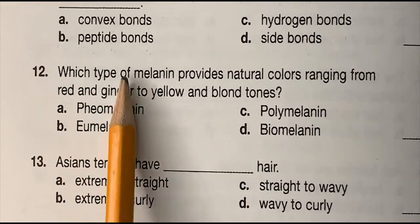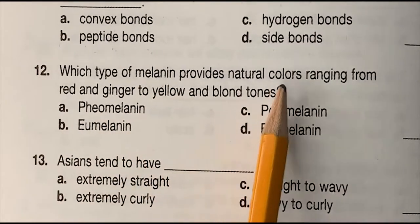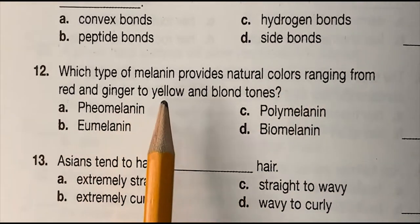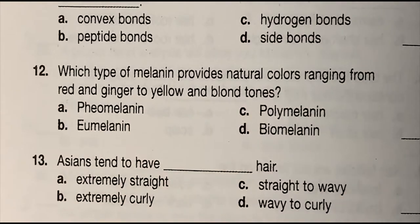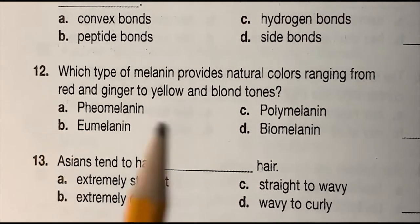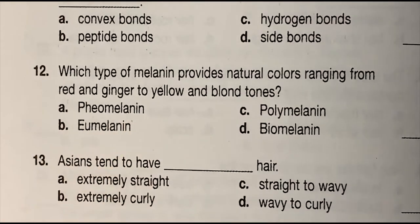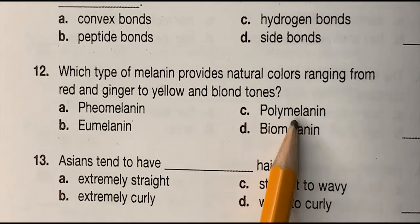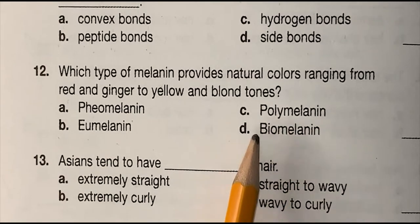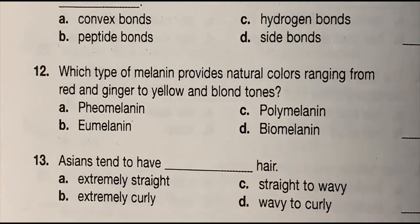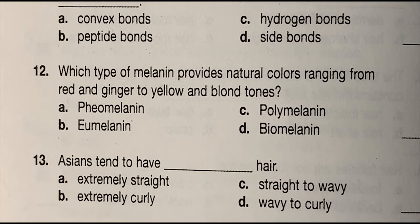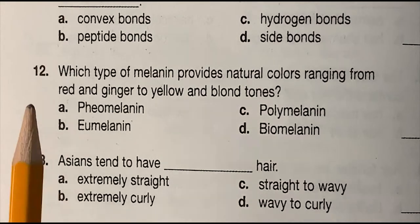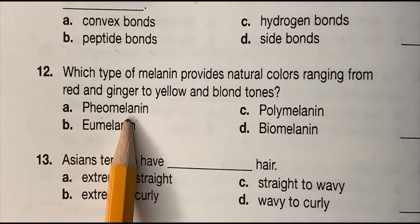Number 12: which type of melanin provides natural colors ranging from red and ginger to yellow and blonde tones — (a) pheomelanin, (b) eumelanin, (c) pilomelanin, or (d) biomelanin? The correct answer is (a) pheomelanin.